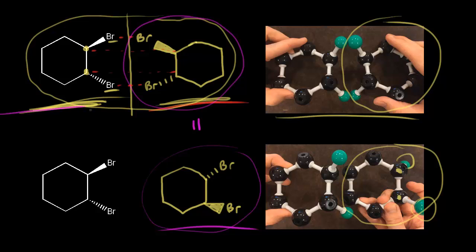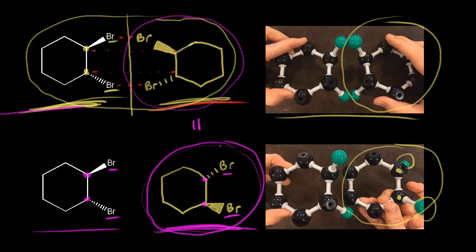Comparing our original compound to this drawing on the right: at this carbon your bromine is coming out at you in space, whereas at the corresponding carbon your bromine is going away from you. At the other carbon, your bromine is going away from you, and at its corresponding carbon your bromine is coming out at you. So to draw our enantiomer, we just invert all chirality centers — if you have a wedge, change it to a dash; if you have a dash, change it to a wedge. This way is often easier, so just make sure to invert all your chiral centers to draw the enantiomer.